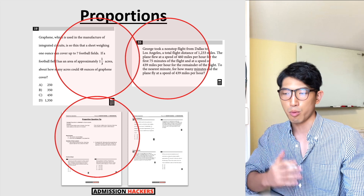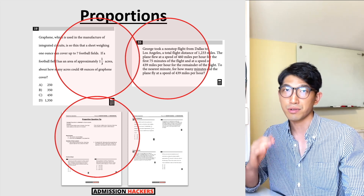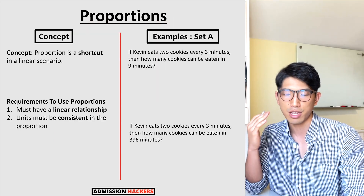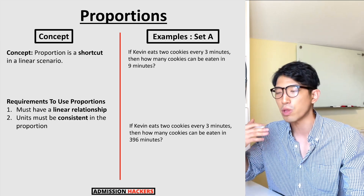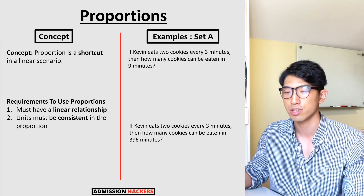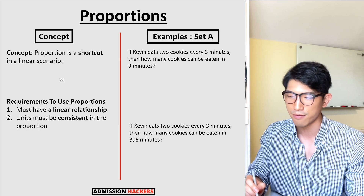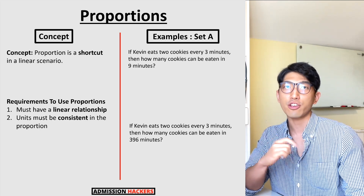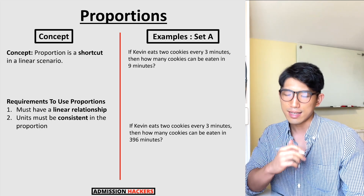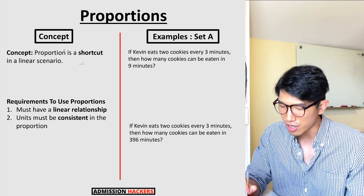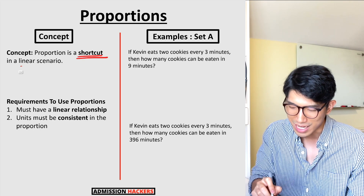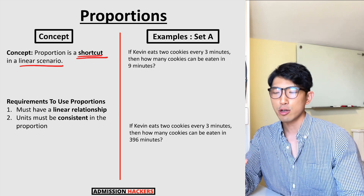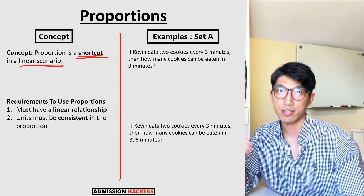When it comes to proportion questions, students have trouble for two reasons: they don't understand what proportion is, and they don't know how to apply it. We'll go over the concept first, then the examples. The one thing you need to know about proportions is that proportion is actually just a shortcut you can use in a linear scenario. Let's go over a couple of examples to show what I mean by a shortcut.